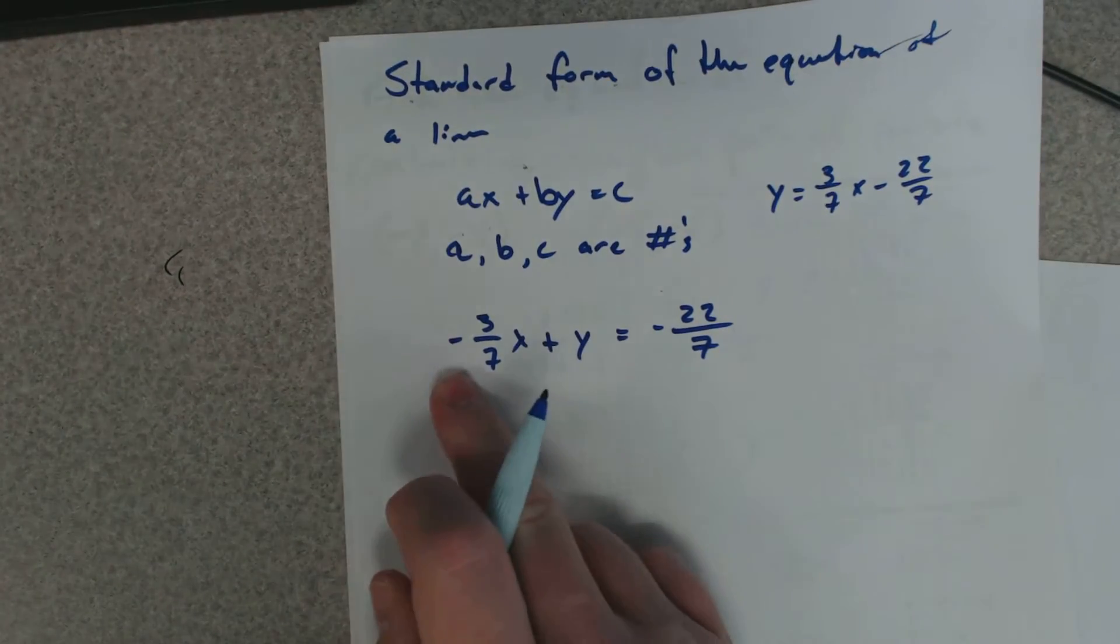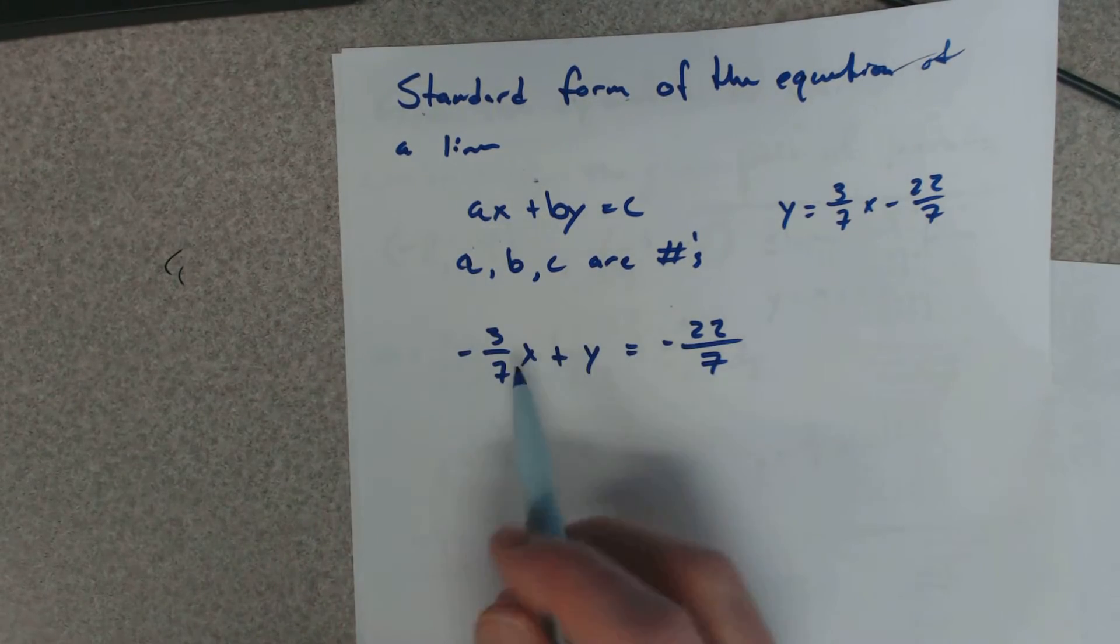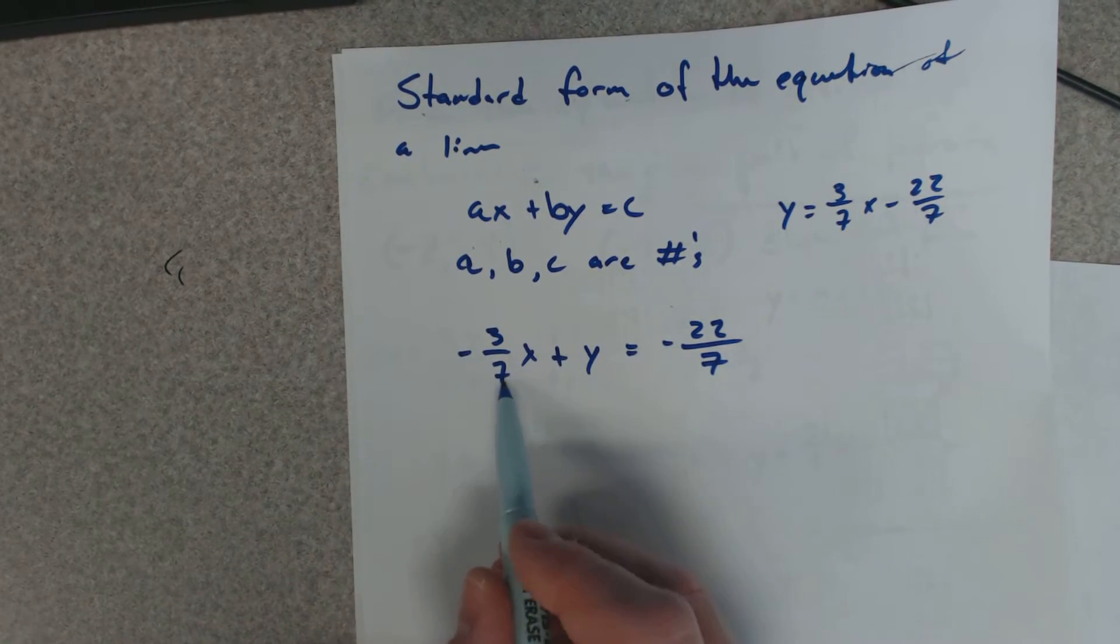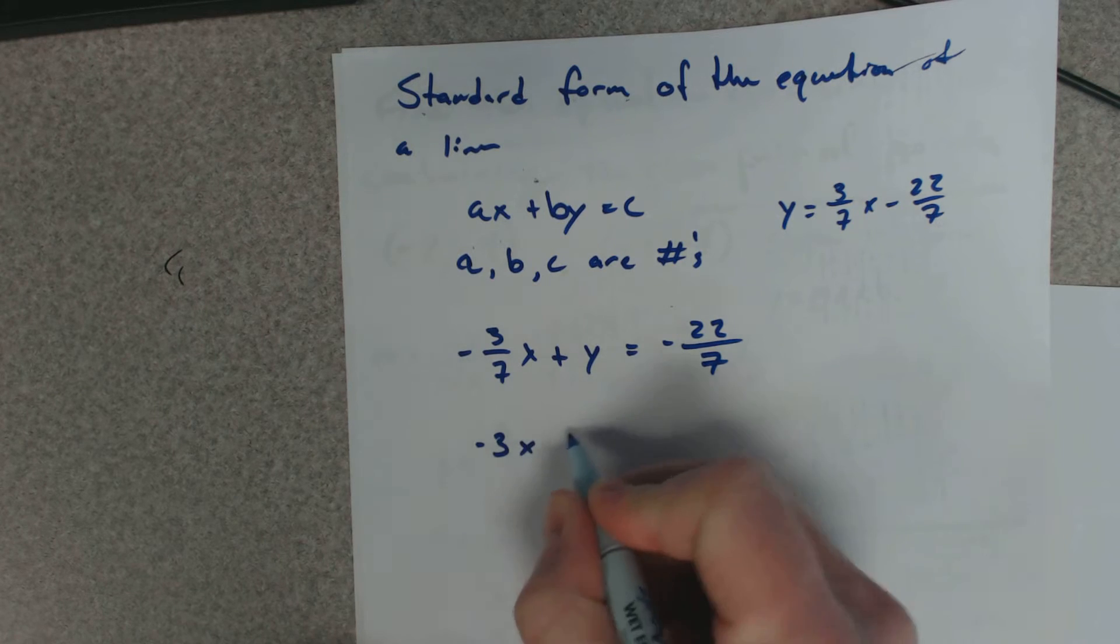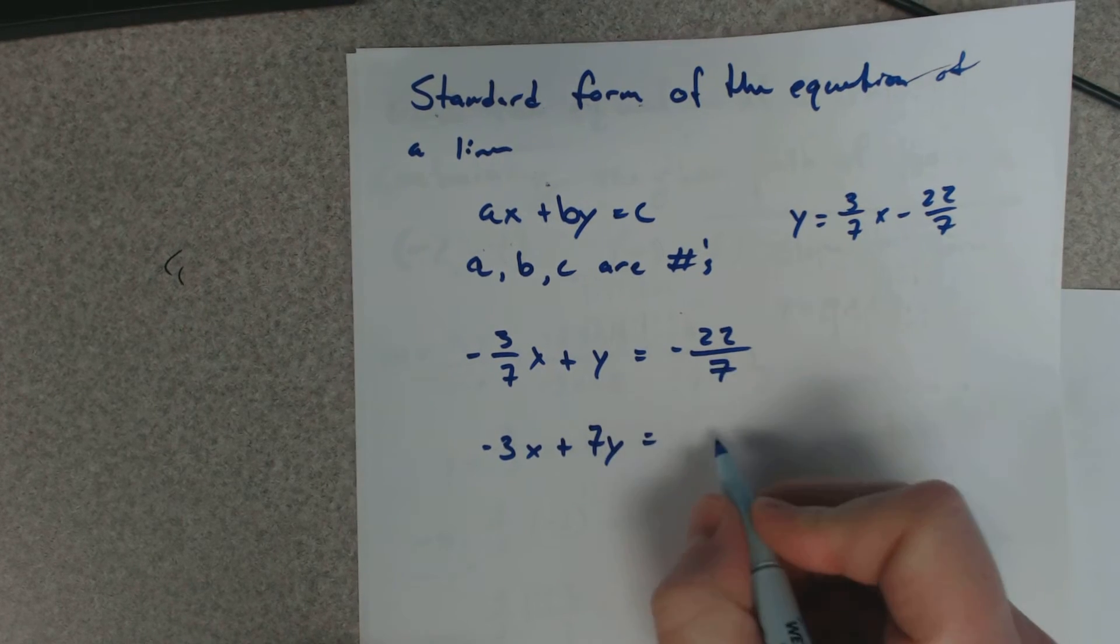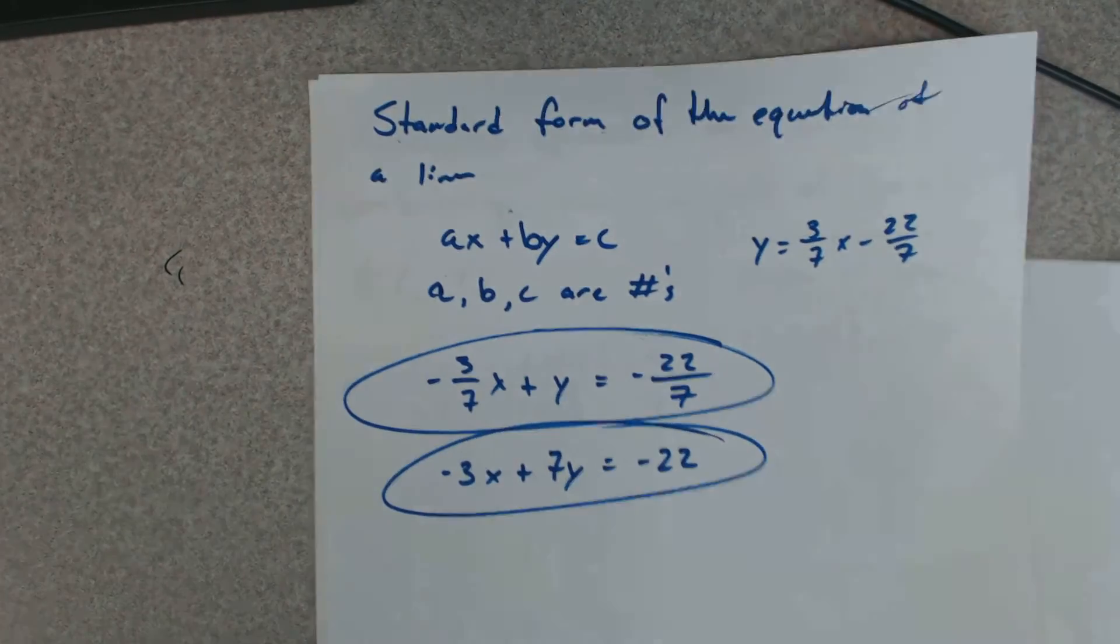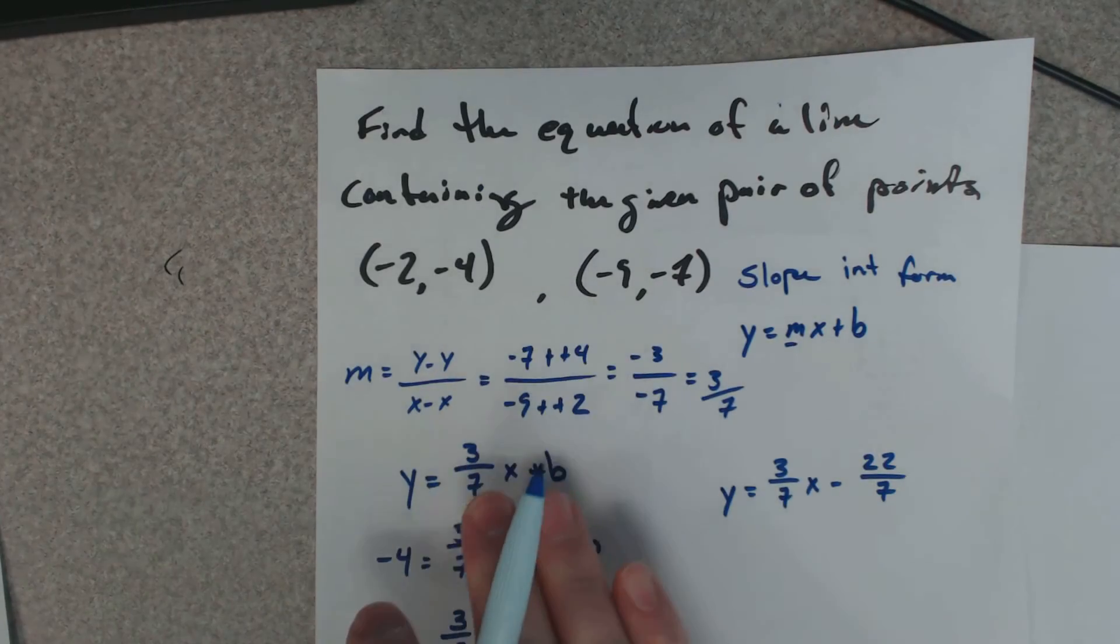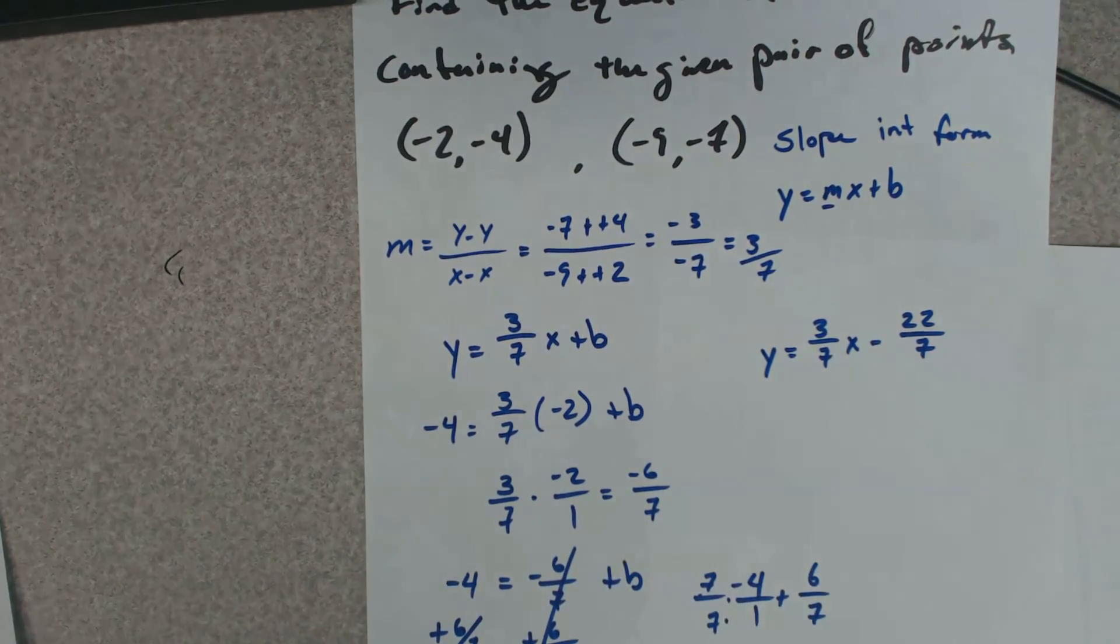Sometimes in standard form they don't like a, b, and c to be fractions, so we need to get rid of our fractions. To do that, we multiply everything by the denominator. That gets rid of the fractions. This times 7, this times 7, and this times 7. So this would be your standard form. That's how you do all these questions: start off by finding the slope, plugging it in, pick a point, solve for b, get your equation.